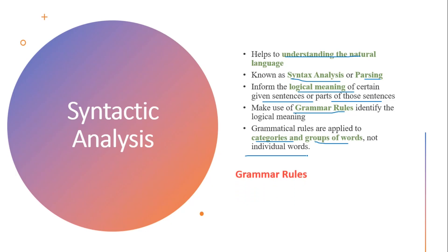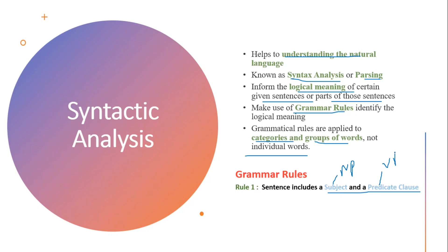Let's see an example. If we talk about grammar rules, here is a very basic example. Suppose we want to check whether a sentence contains a subject clause and a predicate clause. The subject clause represents whether the sentence contains a noun phrase, and the predicate clause represents whether the sentence contains a verb phrase. This is rule one, and we want our sentence to pass this rule in order to determine whether it is grammatically correct.